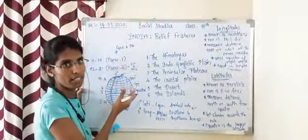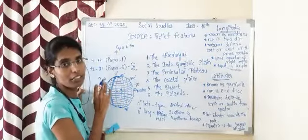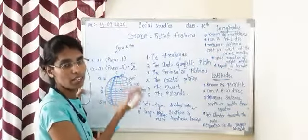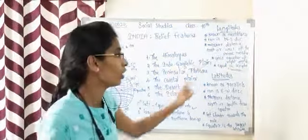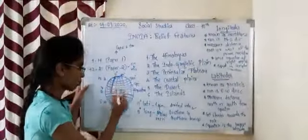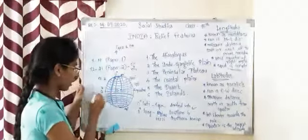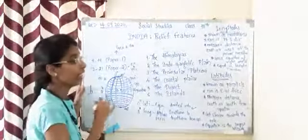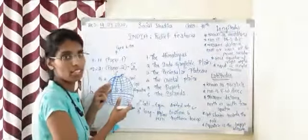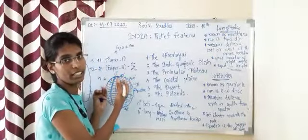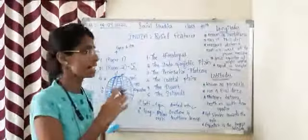We measure east or west based on the prime meridian. If something is on the right side of the prime meridian, we call it east longitude. If something is on the left side, we call it west longitude. Longitudes cross the equator at right angles — they are perpendicular to the equator, forming right angles. Unlike latitudes, which decrease in length towards the poles, longitudes do not decrease — they have the same length throughout the globe.